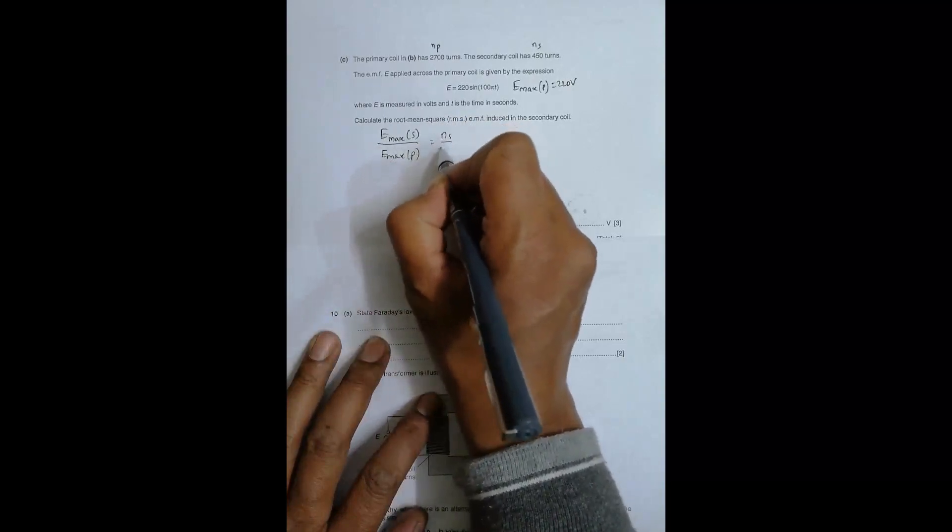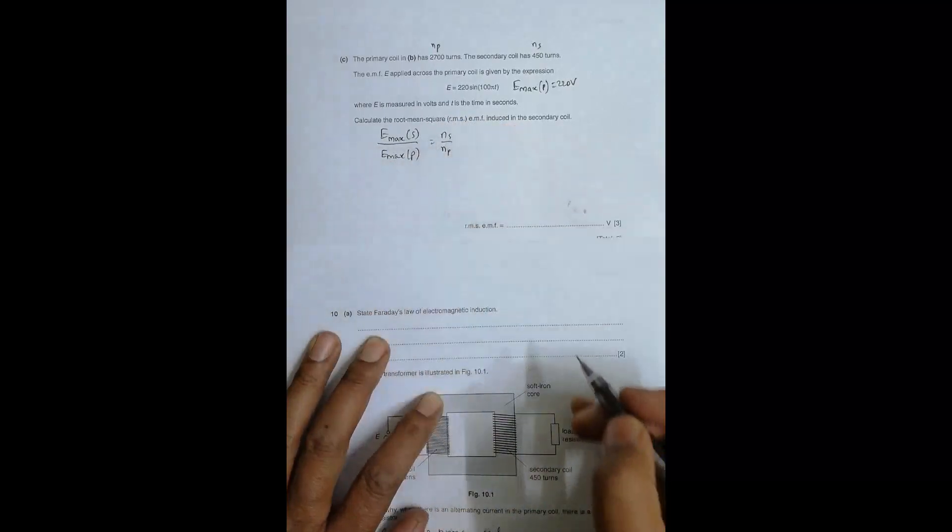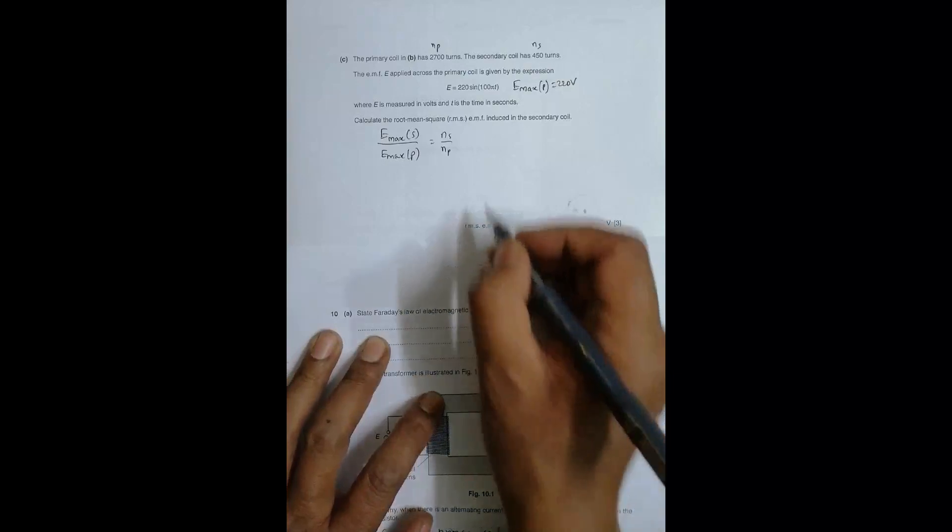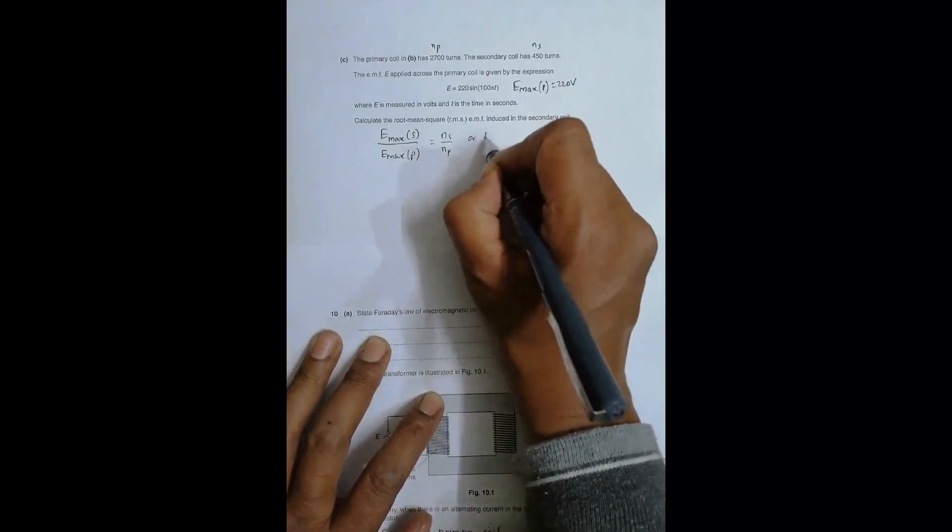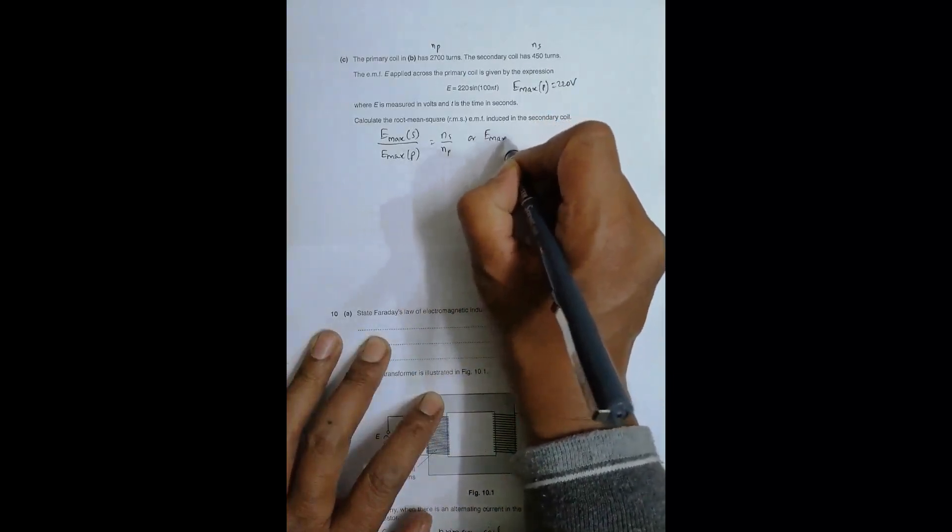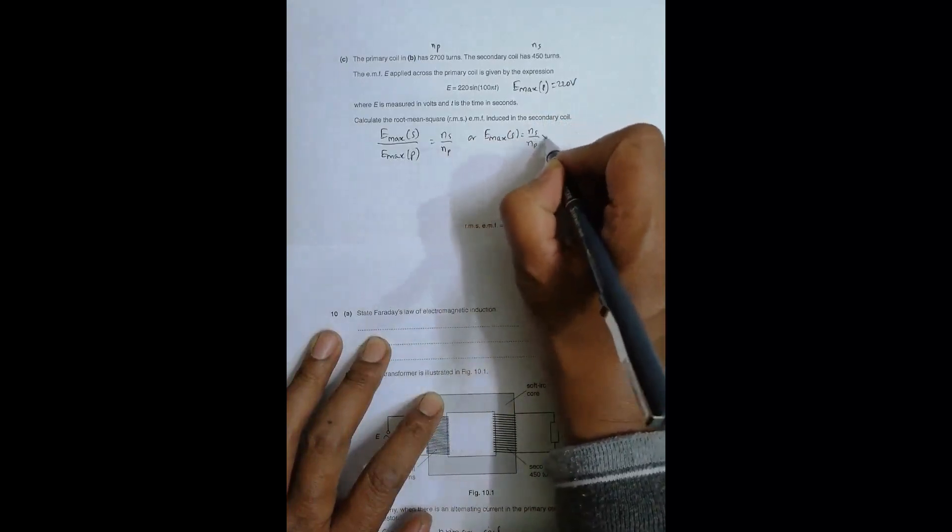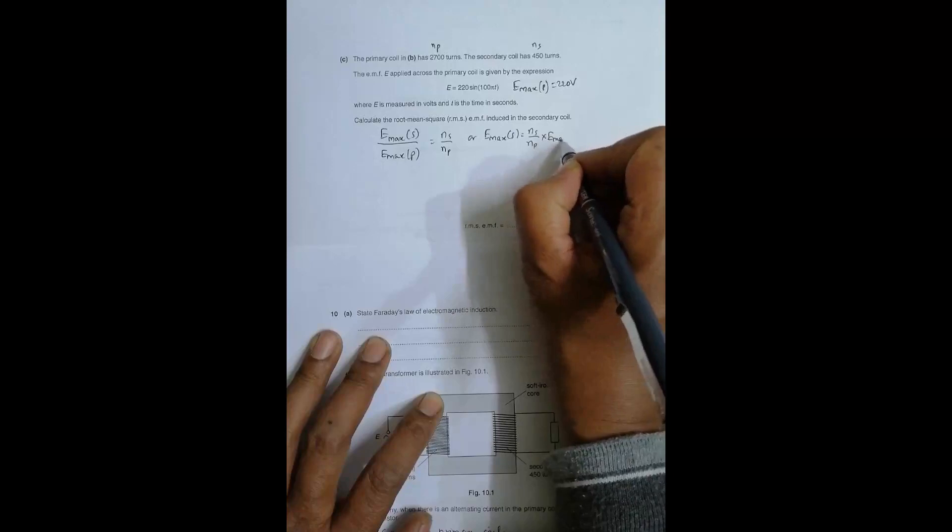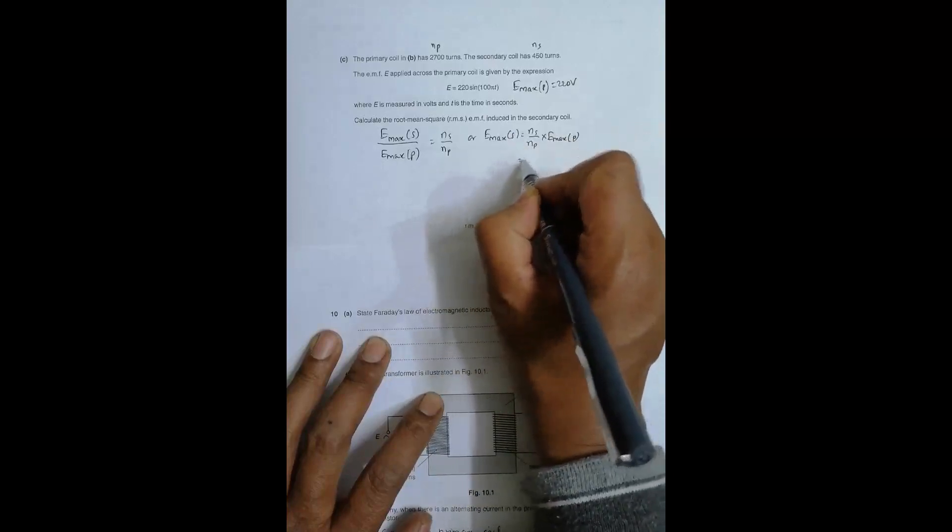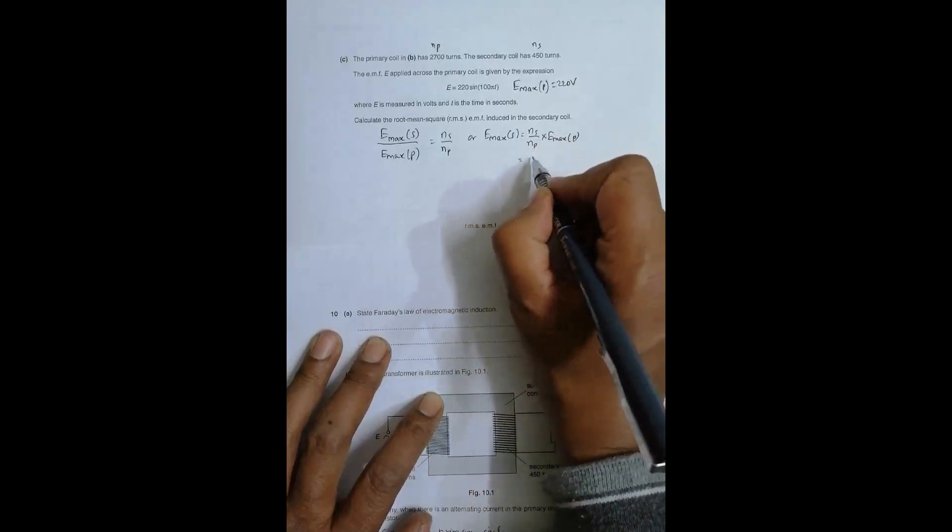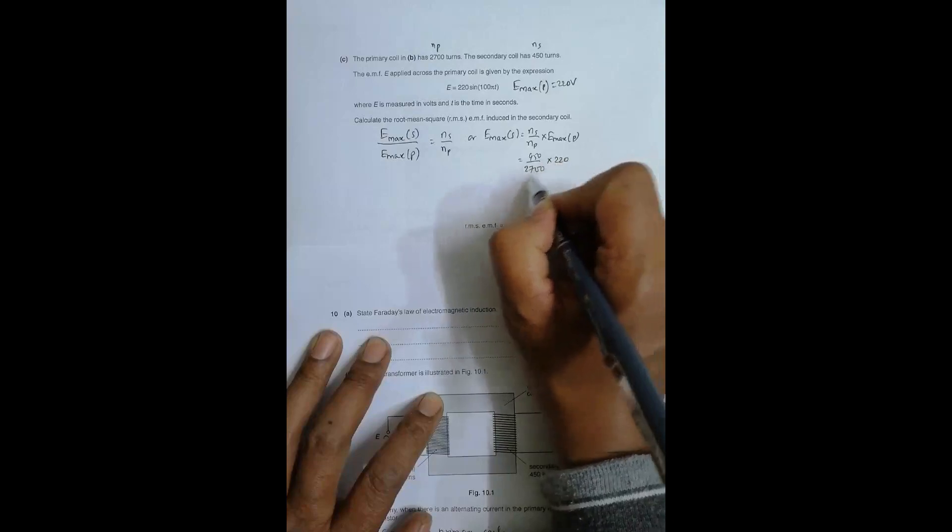This is the regular expression for a transformer, which gives us E_max secondary equals Ns by Np times E_max primary. That equals 450 divided by 2700 times 220 volts.